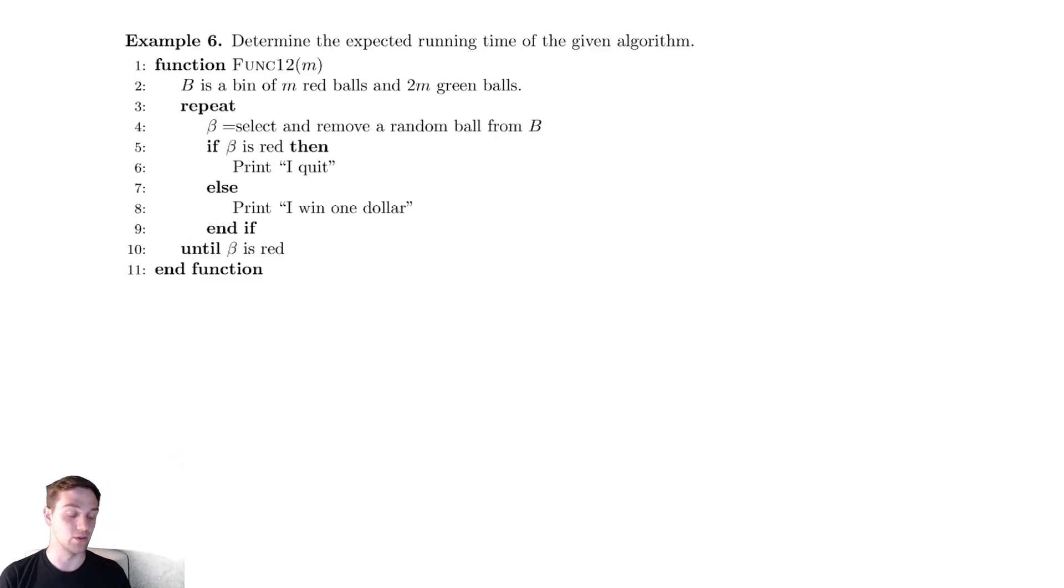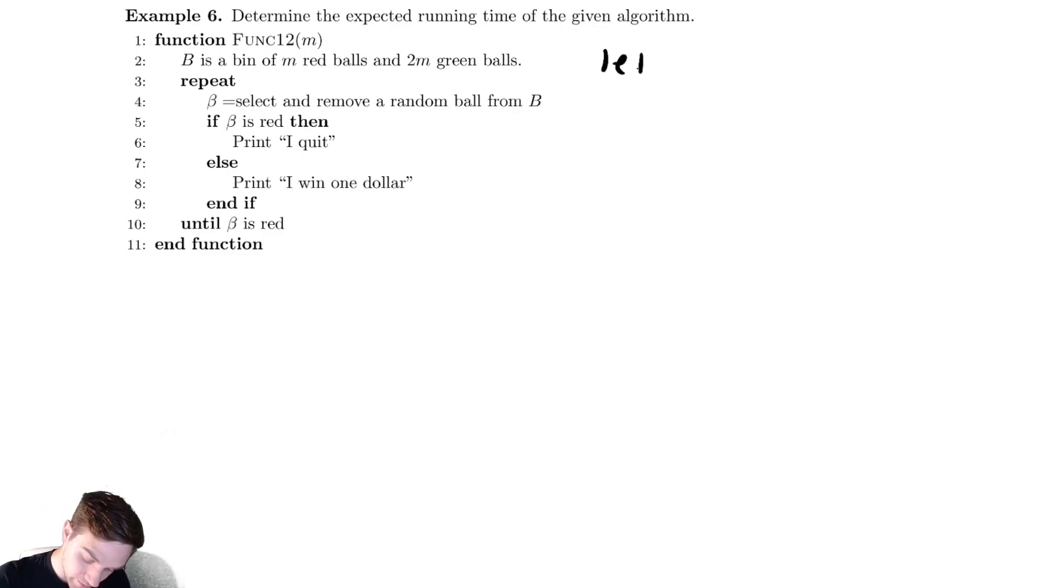This is a very classical example in probability and we're going to do some study of it here. Looking at the code we have that we lose if we take out something that is red and otherwise we are fine, so we want to know how many of these things are going to be green. Let x equal the number of green balls removed.